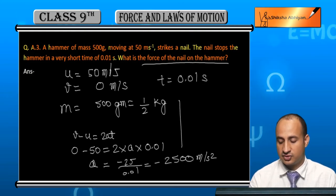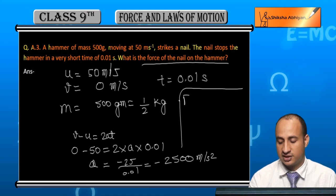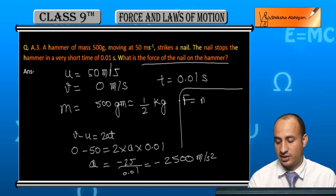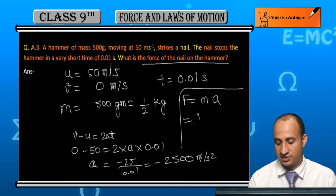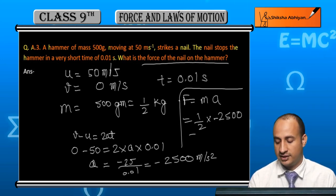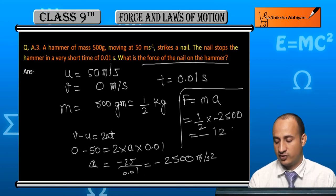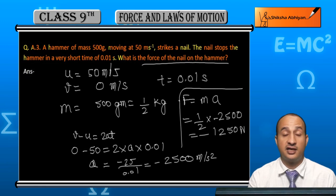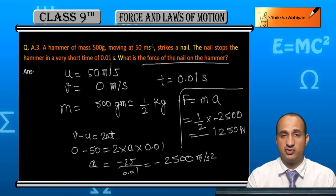Now we can calculate the force. Force equals mass into acceleration, which is half into minus 2500. This equals minus 1250 Newtons. The negative sign indicates the direction of force.